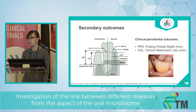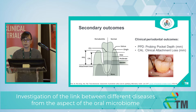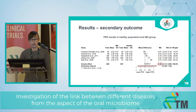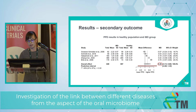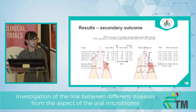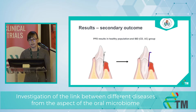As secondary outcomes, we measured the available clinical periodontal outcomes. The two most common ones are probing pocket depth and clinical attachment loss, both measured in millimeters using a periodontal probe. The forest plot showed a mean difference in PPD results between healthy and IBD patients of 0.26 millimeters. Although this is statistically significant, in the clinic it does not have real relevance — the difference is so small it cannot even be measured clinically.